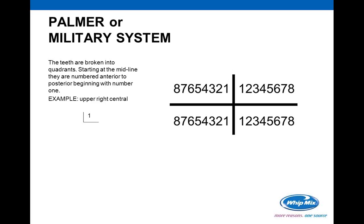The Palmer or military system breaks the teeth into quadrants, each numbered one through eight. There's a bracket notation indicating direction. The same tooth — the upper left central — would be written as the patient's upper left number one. The potential confusion is that if not written properly, it can look like L1 and be mistaken for lower one, so you need to know which system your doctor is using.